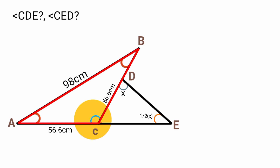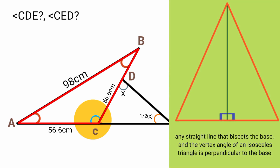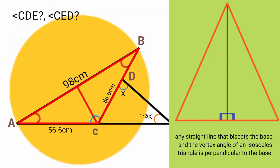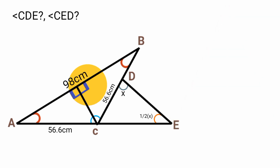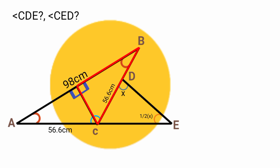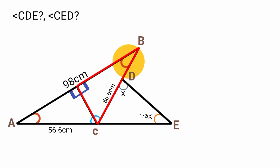Since we have the lengths of all sides, we apply the rule that any straight line bisecting the base and vertex angle of an isosceles triangle is perpendicular to the base. We draw a straight line bisecting the vertex angle and the base, creating a right angle. Taking one side, we now have a right-angled triangle, and we can find the base angle using SOHCAHTOA.